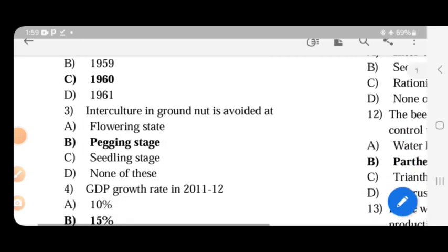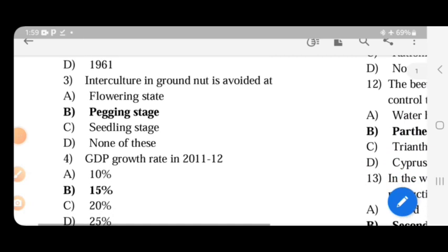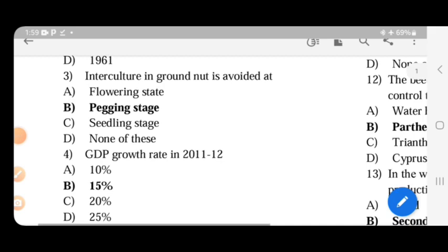Next. Intercropping in groundnut is avoided during the pegging stage, which is 55 days after sowing.